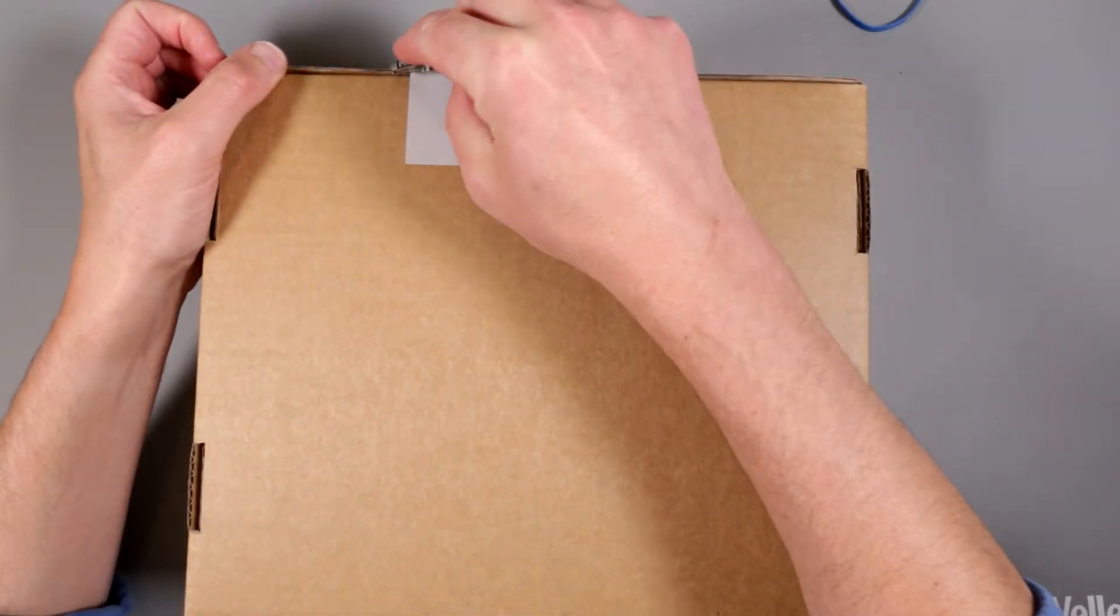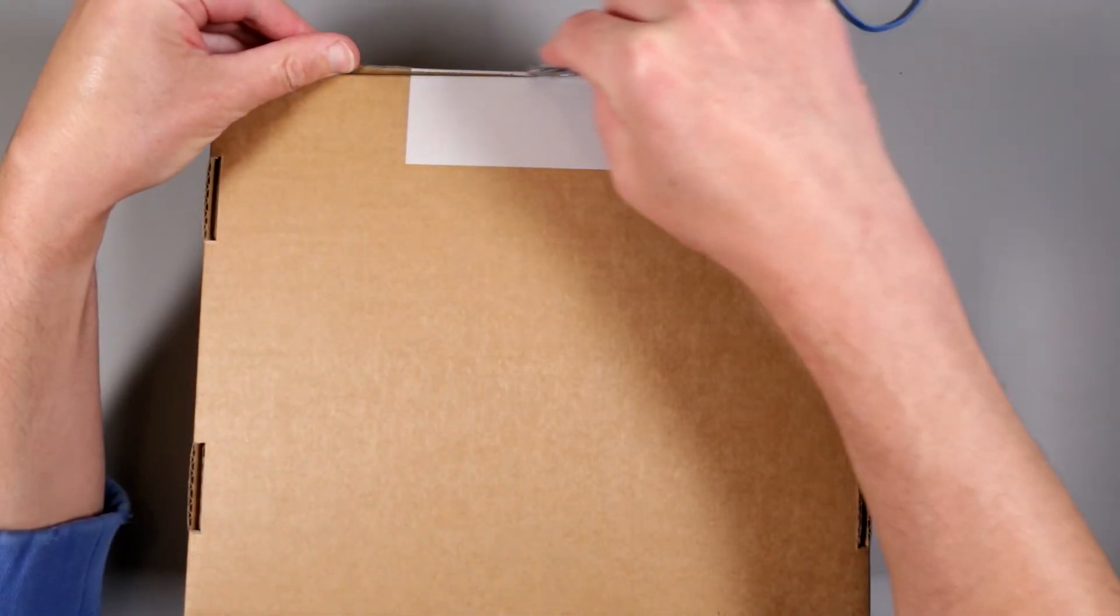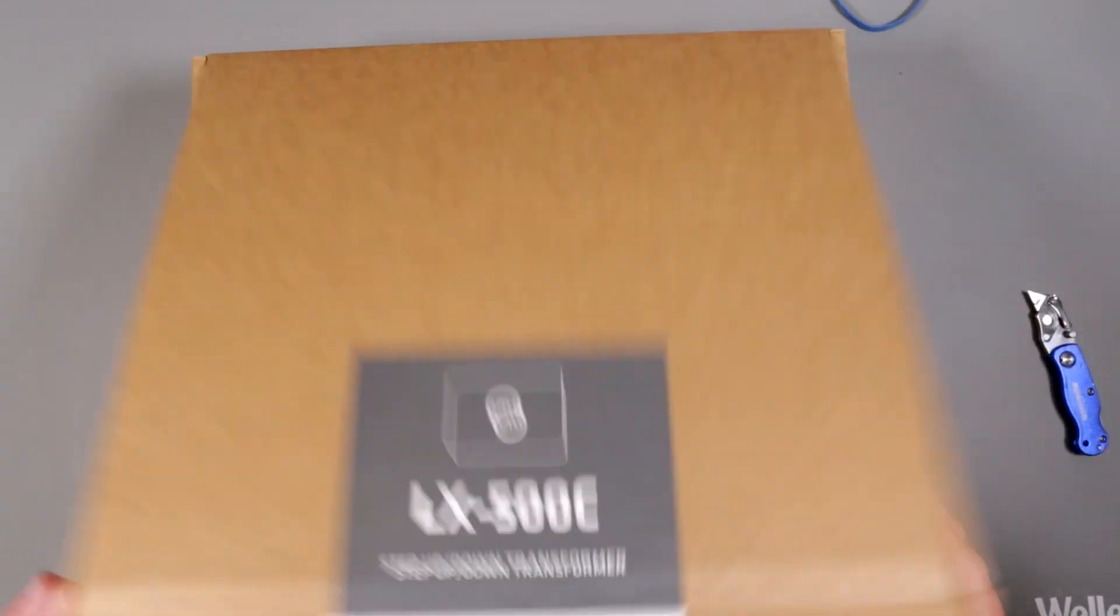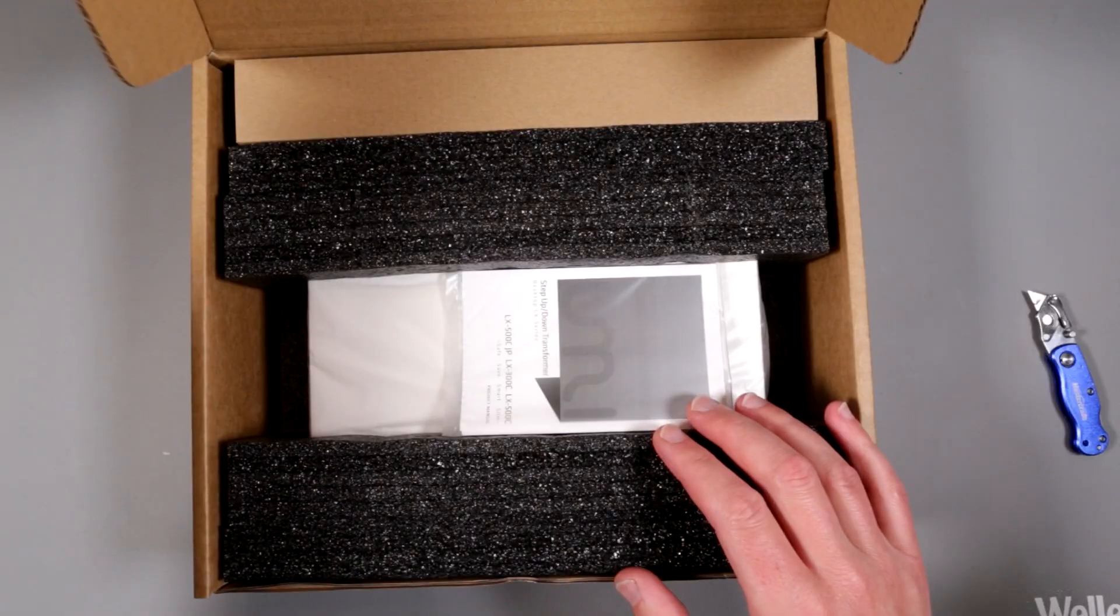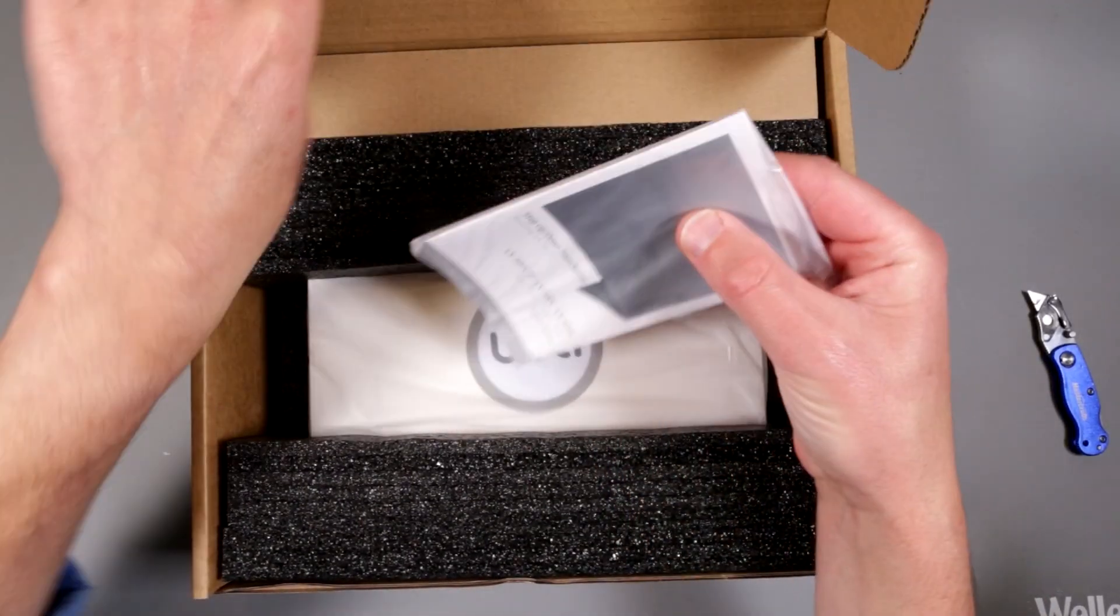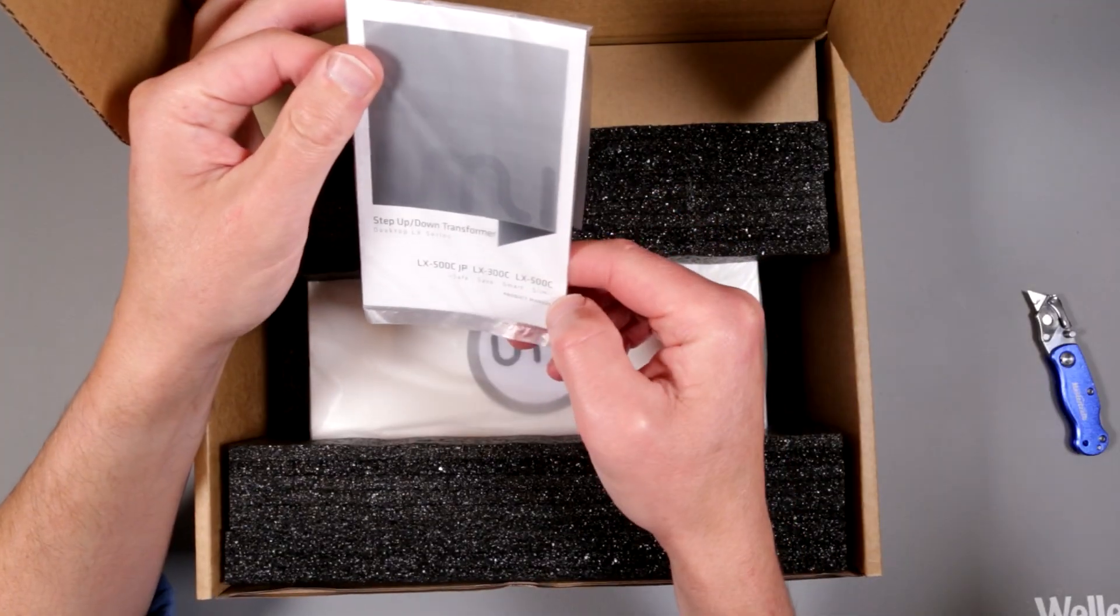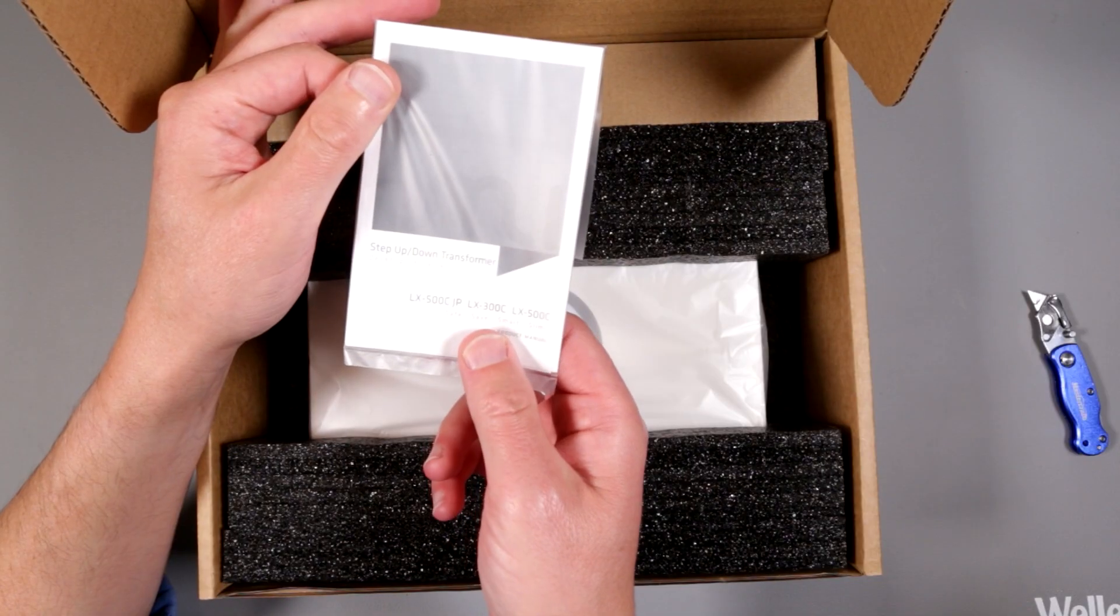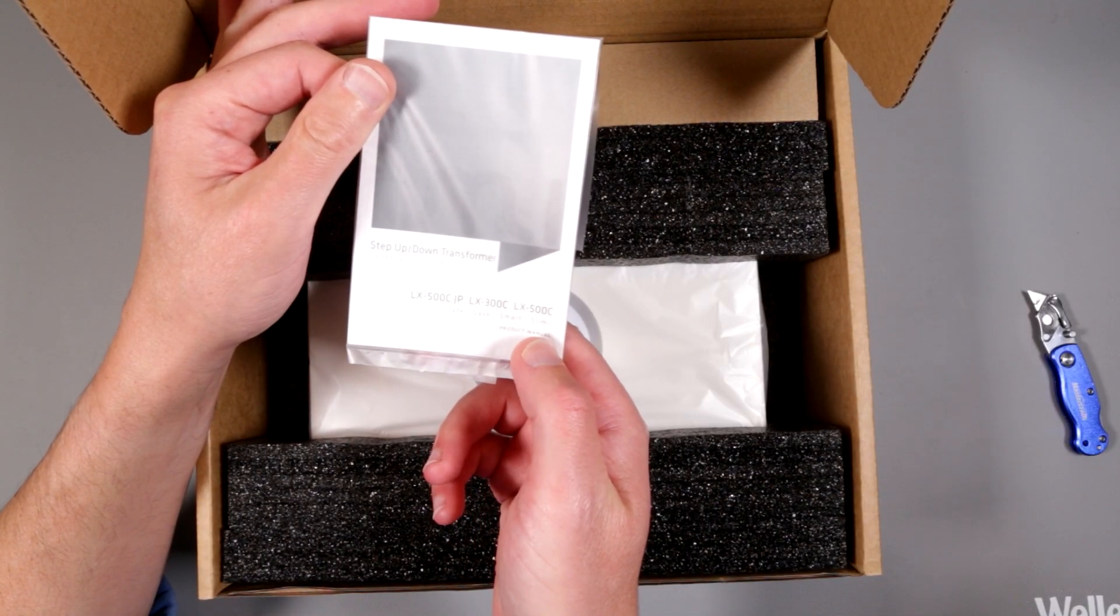Alright, so we need to unbox this little, actually it's not that little thing and actually it's quite heavy. It probably weighs about two kilos or one and a half, something like that. So here we are, it's boxed nicely and we have step up and down transformer, desktop LX series. There is a 500C JP, 300C and LX500C.